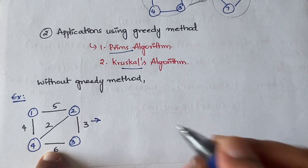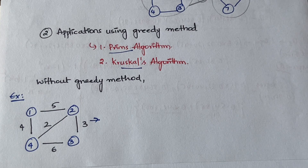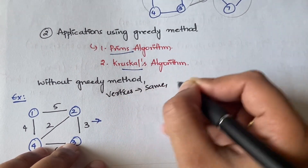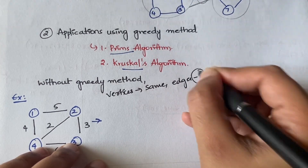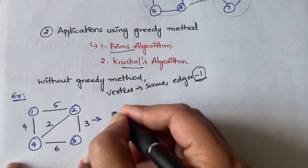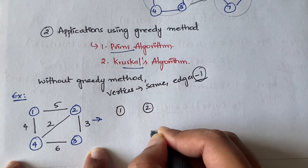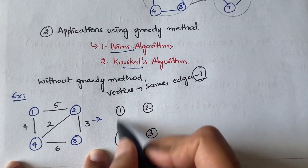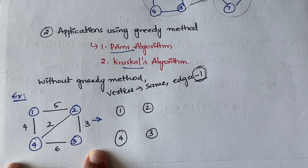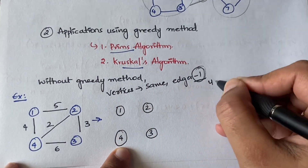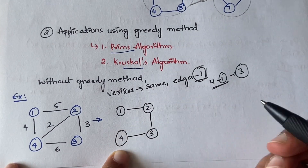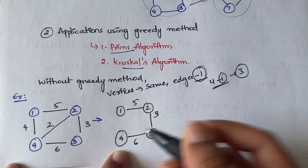If you are given a graph, how do you find spanning trees? In a spanning tree, the number of vertices remains the same but edges will be number of vertices minus one. For this graph with four vertices, you need three edges in the spanning tree. One possibility is to connect the vertices with edges of cost 5, 3, and 6.